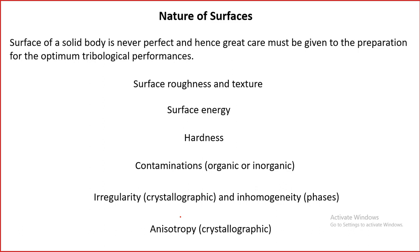Two surfaces may not be exactly the same, even if produced the same way. For example, two steel surfaces produced by the same process may not be the same in terms of their surface properties, and therefore tribological properties will also change. The first surface feature to consider for tribology is surface roughness and texture.